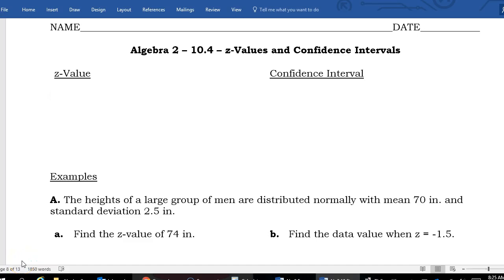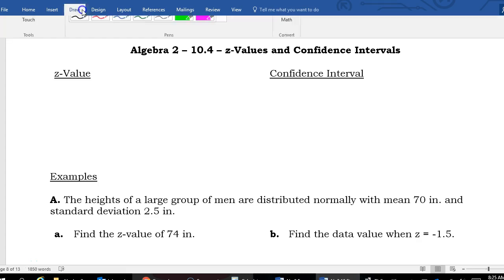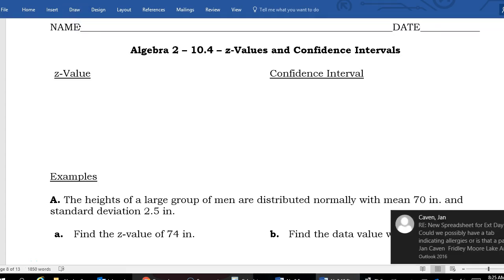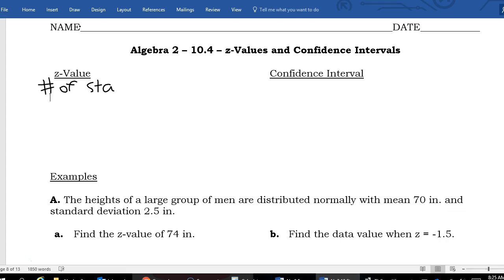This is Algebra 2 Lesson 10.4, Z Values and Confidence Intervals. A Z value is the number of standard deviations from the mean, and we have a formula that we can calculate that for any data value.